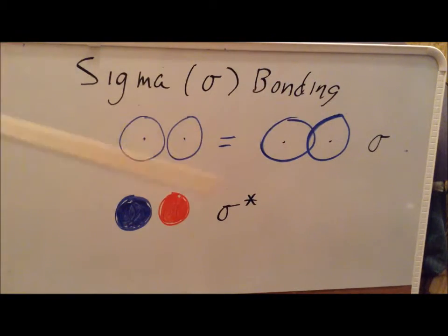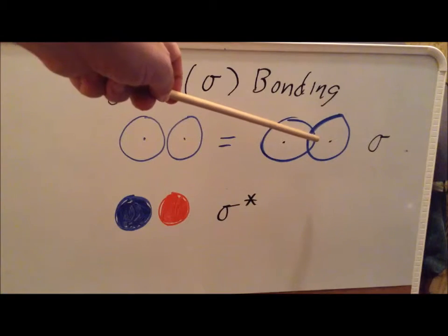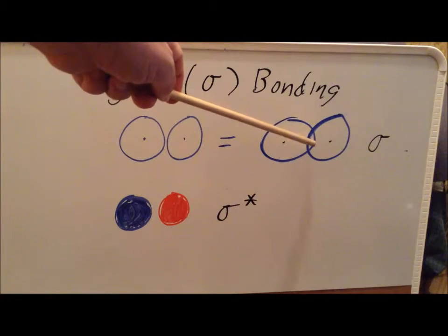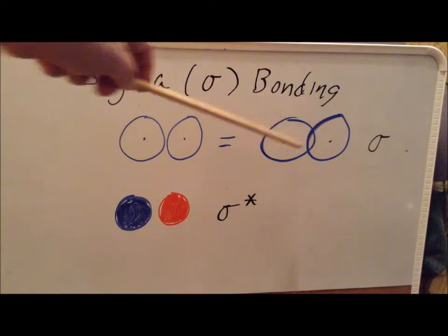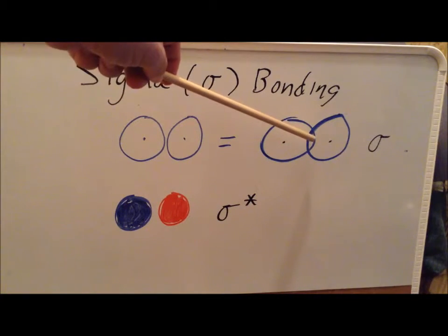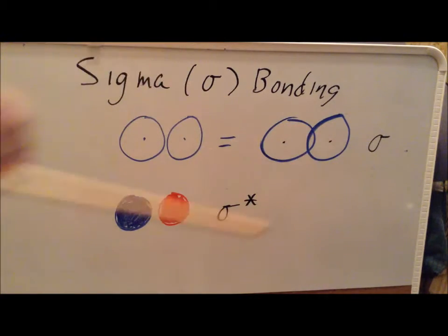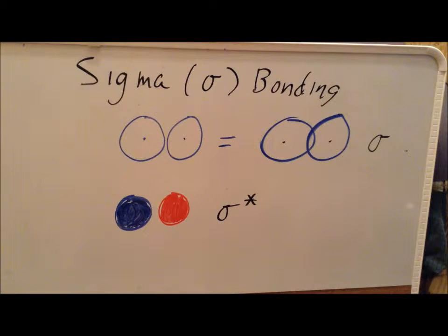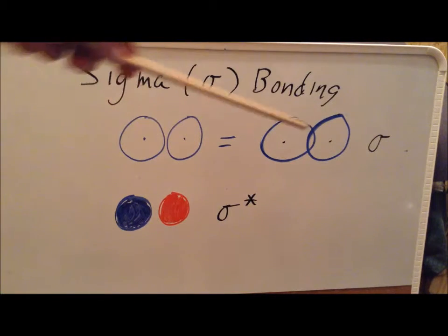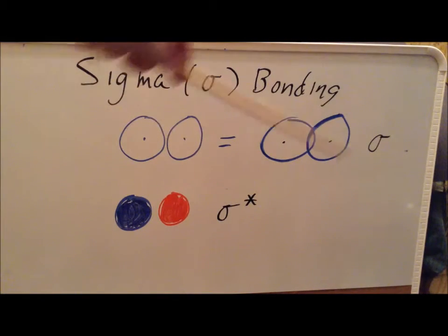In the overlap region — almost like a Venn diagram — we have an increase in electron density. It's this increase in electron density that actually holds the two atoms together in a bond.